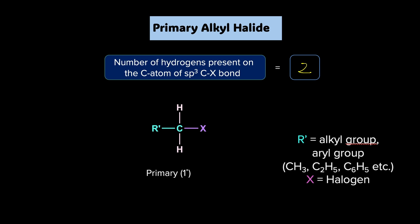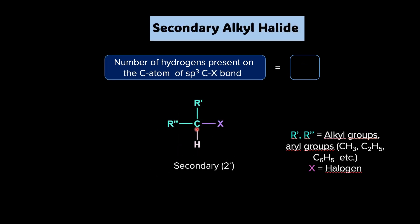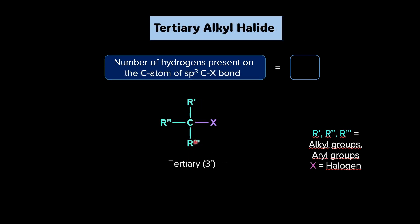Similarly, for a secondary alkyl halide, to this carbon we have two alkyl groups present and one hydrogen attached. So if the number of hydrogens present on the SP3 hybridized carbon of the carbon-halogen bond is equal to one, we call it a secondary alkyl halide. And if there is zero hydrogen present — all three substituents are alkyl groups — then we have a tertiary alkyl halide. So alkyl halides can be 1°, 2°, or 3°.